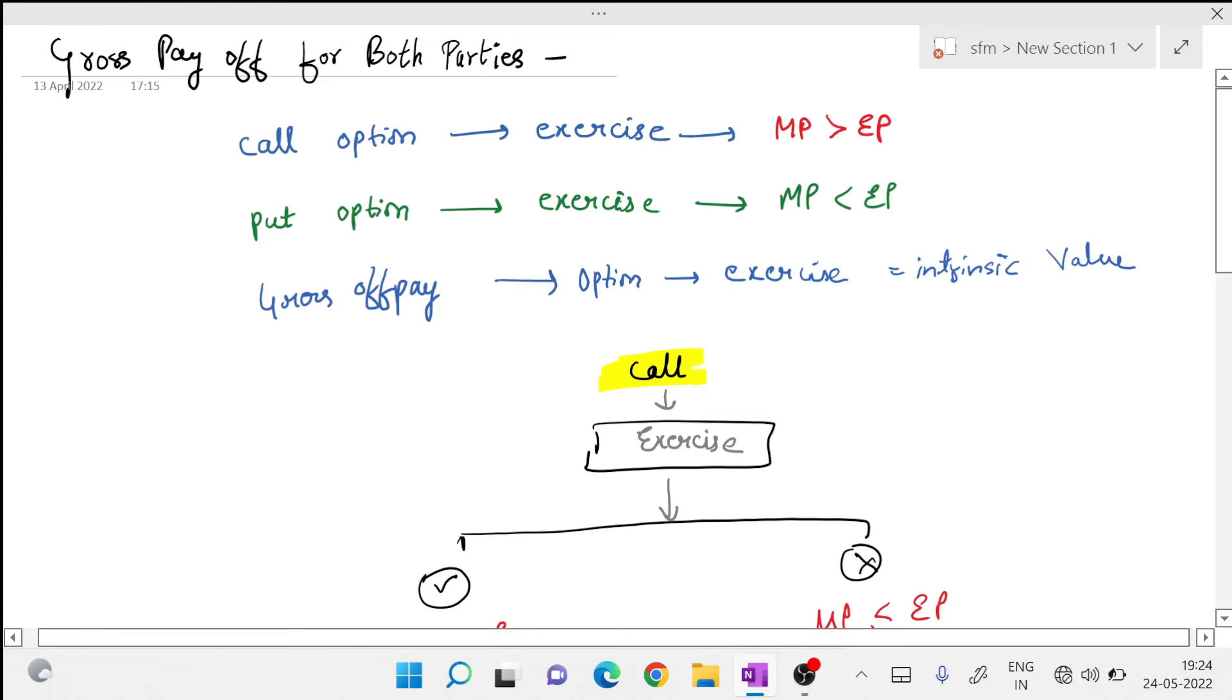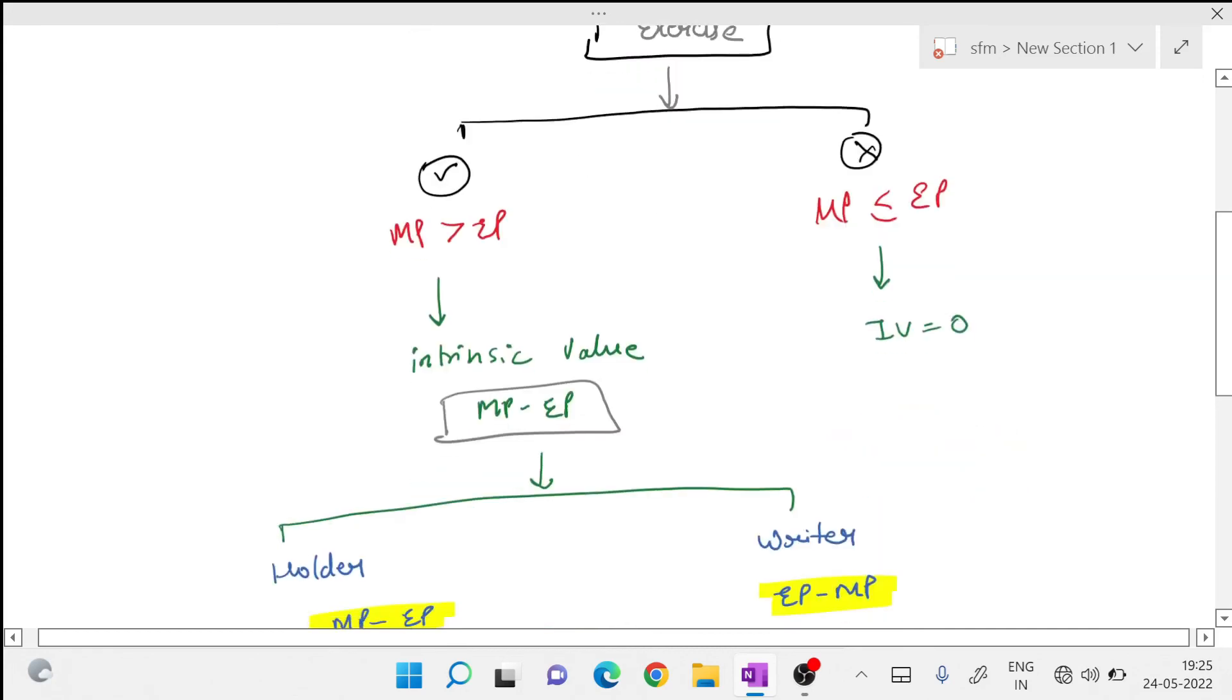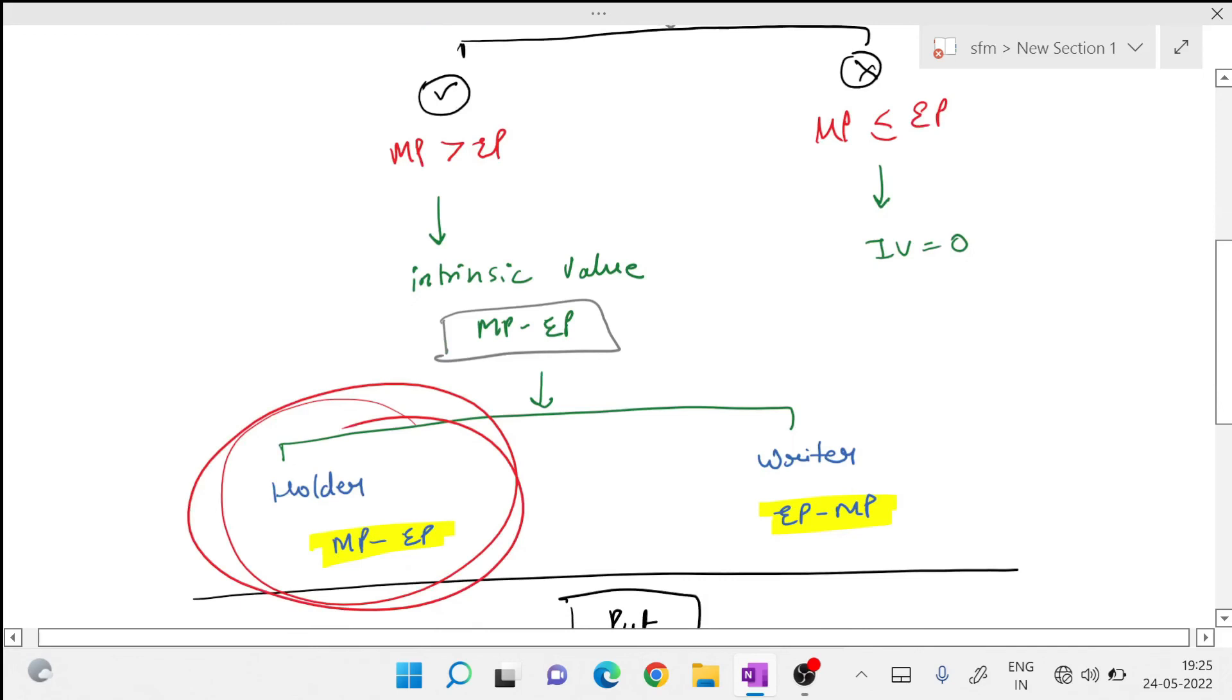Okay guys, now let's move further. Gross up. How do you see there? Option exercise when market price is lower than exercise price. That is the reason intrinsic value will become zero. And in this case what is your intrinsic value? In case of holder, market price minus exercise price. It is a profit for him. And for writer it is lost for him because whenever the holder will use the option, the writer will get lost always.